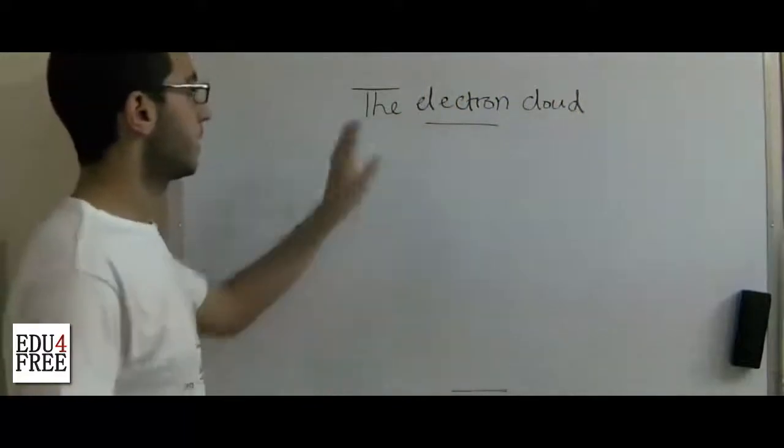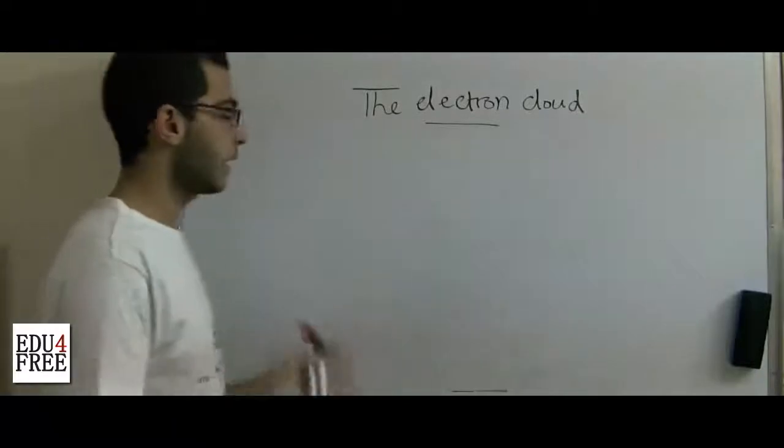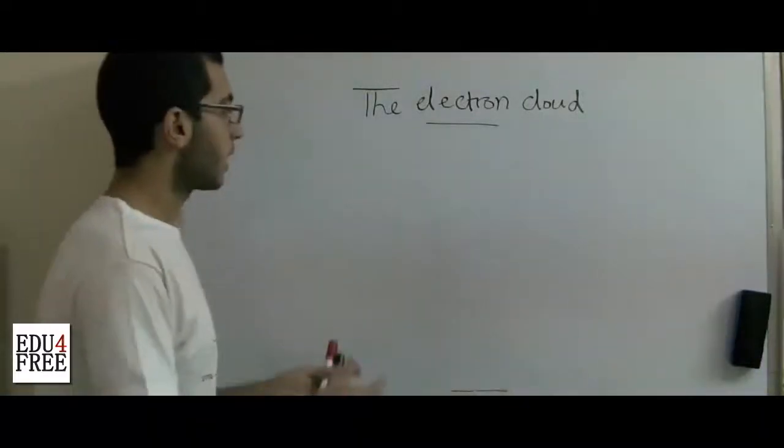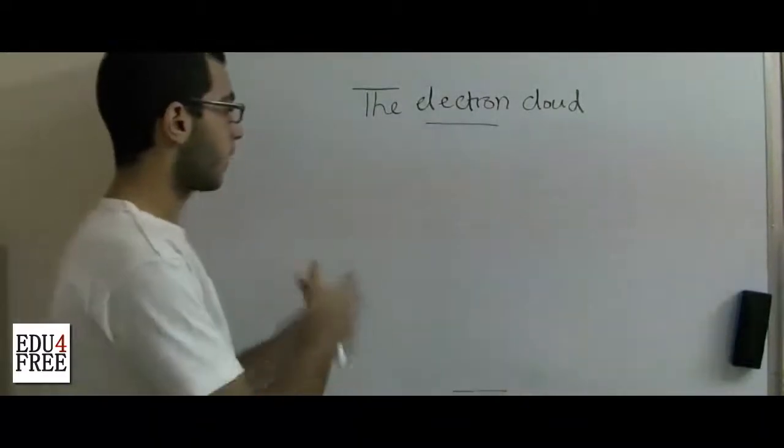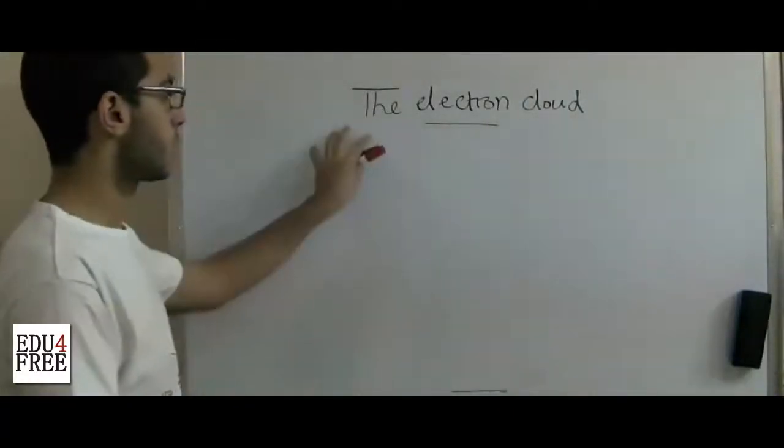The same thing is applied in the electron cloud. The electron cloud is the area where all the orbitals are found and it's probable to find the electron somewhere in this electron cloud.